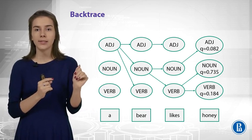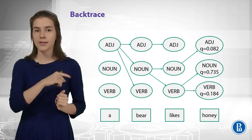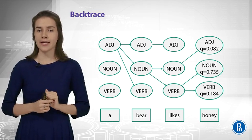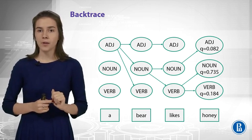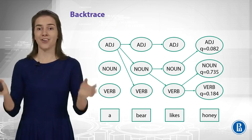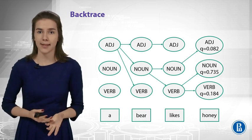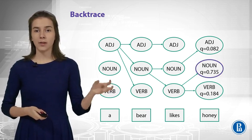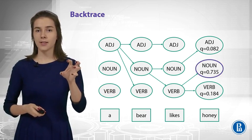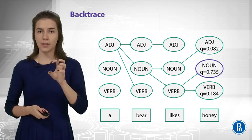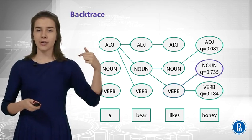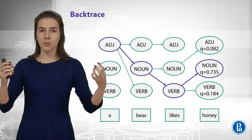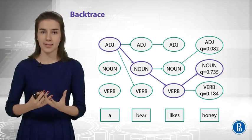So, what do we need to compute now? We have these three candidates that can finish in one of the three states for 'honey'. Remember we need the most probable one ever. So, we need to compute maximum once again. We need to compute maximum. It would be noun. And then we take it and we say that, okay, the last state in our sequence should be noun. And then we backtrace to verb, to noun, and to adjective to get the sequence of tags that is the best in this case.